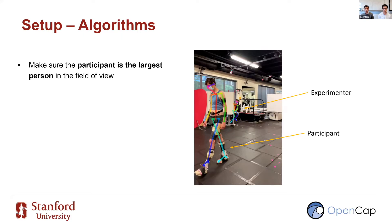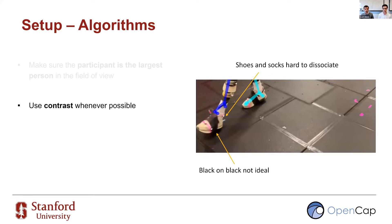A couple of tips related to your setup and the algorithms of OpenCAP. Make sure the participant is the largest person in the field of view across the entire time sequence — the largest bounding box corresponds to the participant. Also try to use contrast. It's not a requirement and pose estimation algorithms are robust, but it helps. For example, black straps on a black floor or socks and shoes of the same color may contribute to OpenPose failing to identify the foot.